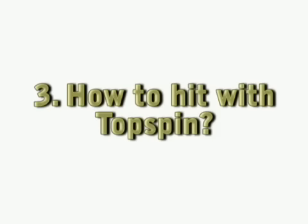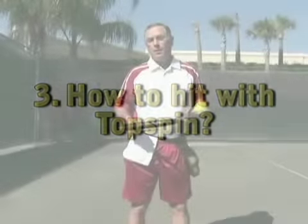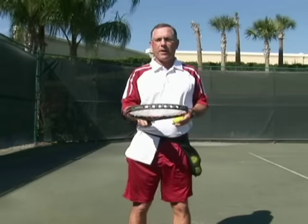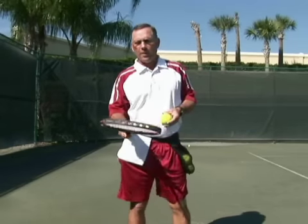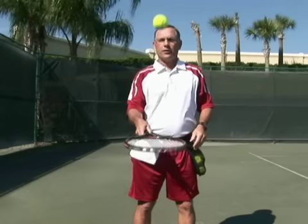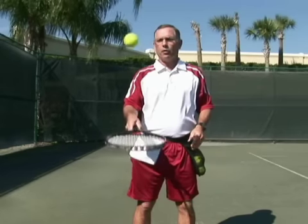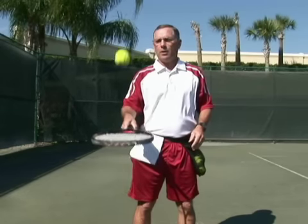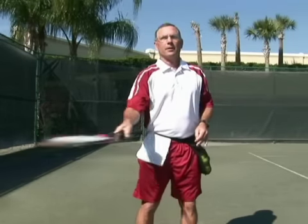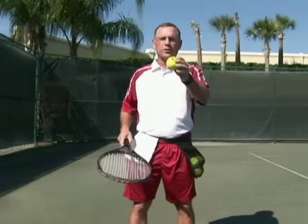Question number three: how do you hit with topspin? A really easy way to think about it is by taking your racket and brushing the ball. I'm not going to roll it over — I'm just going to do this vertically, what they call an up volley. If I hit the ball like this there's no topspin at all, but if I start brushing with my racket like this, you impart a spin on the ball.